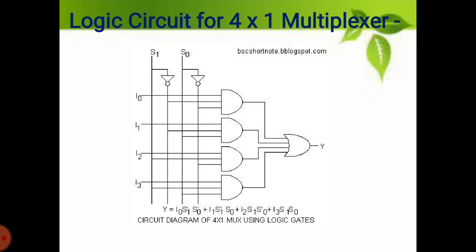In order to select input i2, the state of selector switches S1 and S0 must be 1 and 0 — that is the binary of 2 — respectively. In this situation, only gate 3 has all inputs high to produce a high output; all outputs of the other gates remain low. So, as per the input, the output is selected in the multiplexer. In this way, we can also solve the circuit diagram of an 8-to-1 multiplexer and a 16-to-1 multiplexer.